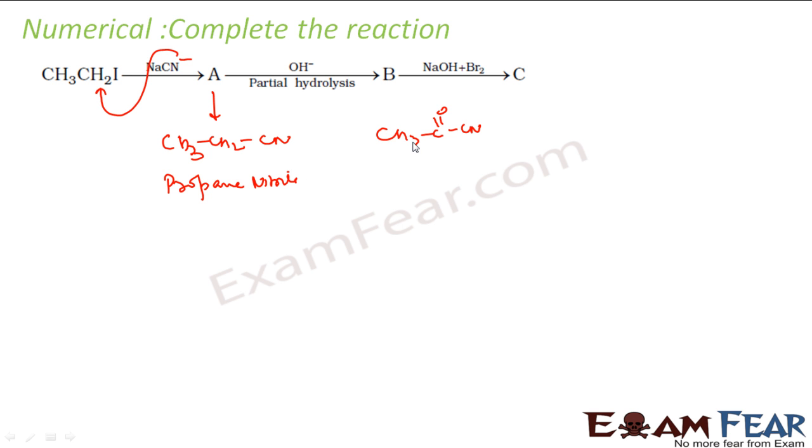Now you are reacting with NaOH and Br2. CN should become CONH2. Now this when you add NaOH, Br2, that is Hofmann degradation, CO will go off. So this becomes CH3CH2NH2. This is ethanamine and this is propanamide. That's what the reaction should be.